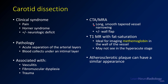On CT or MRA, you may see a long smooth tapered vessel. You might see a flap, but many times you'll just see narrowing with smooth tapering. The image type we were seeing is T1 with fat saturation. You have to saturate out the fat of the neck, and when the neck fat is completely removed, you see the T1-bright methemoglobin in the wall. Atherosclerotic plaque can have a similar appearance but usually doesn't have this acute-appearing methemoglobin.